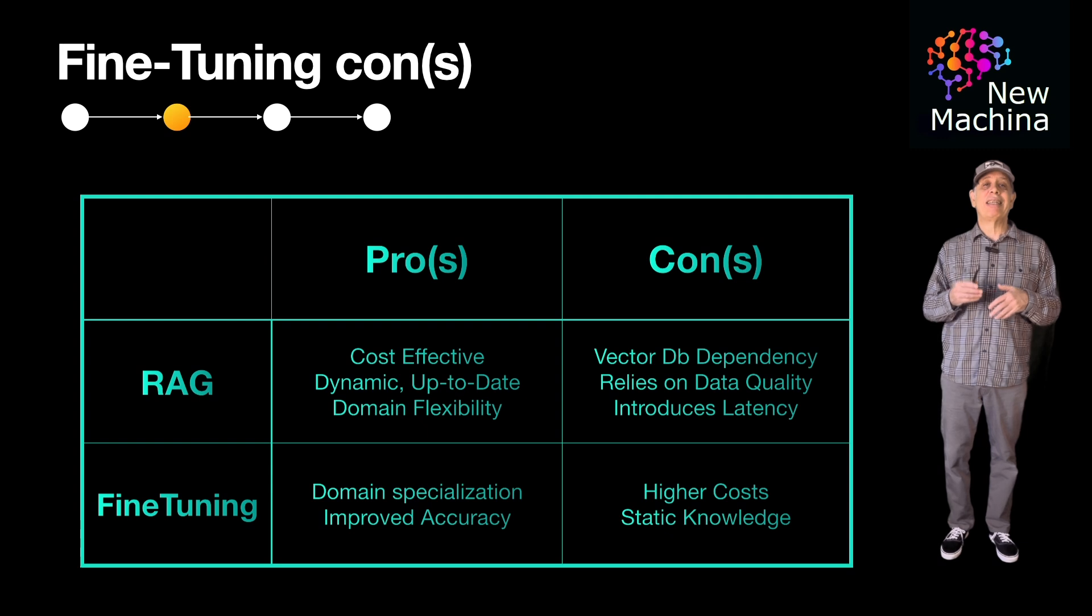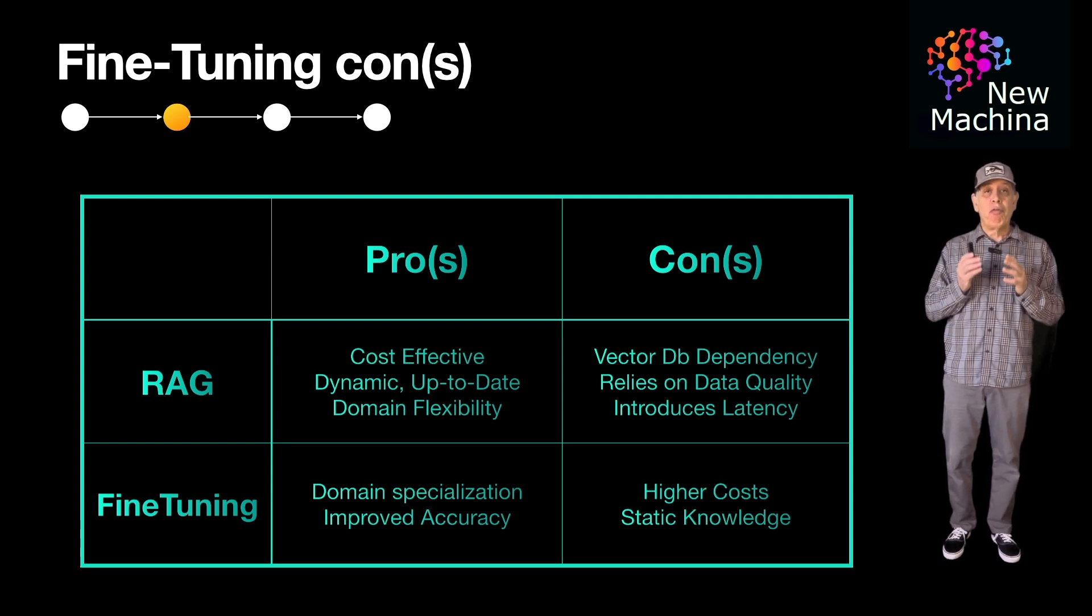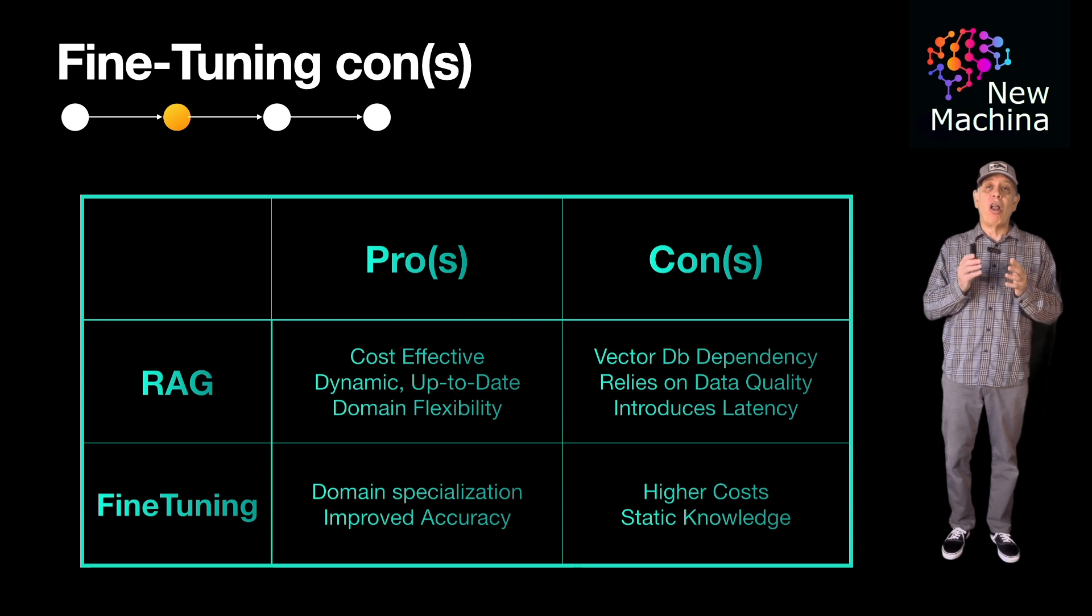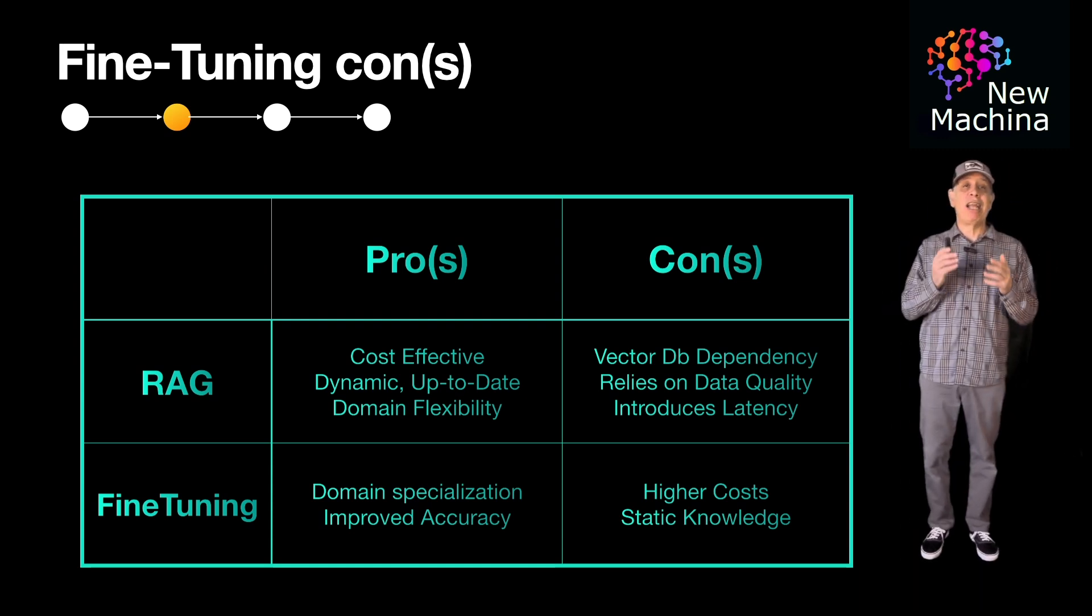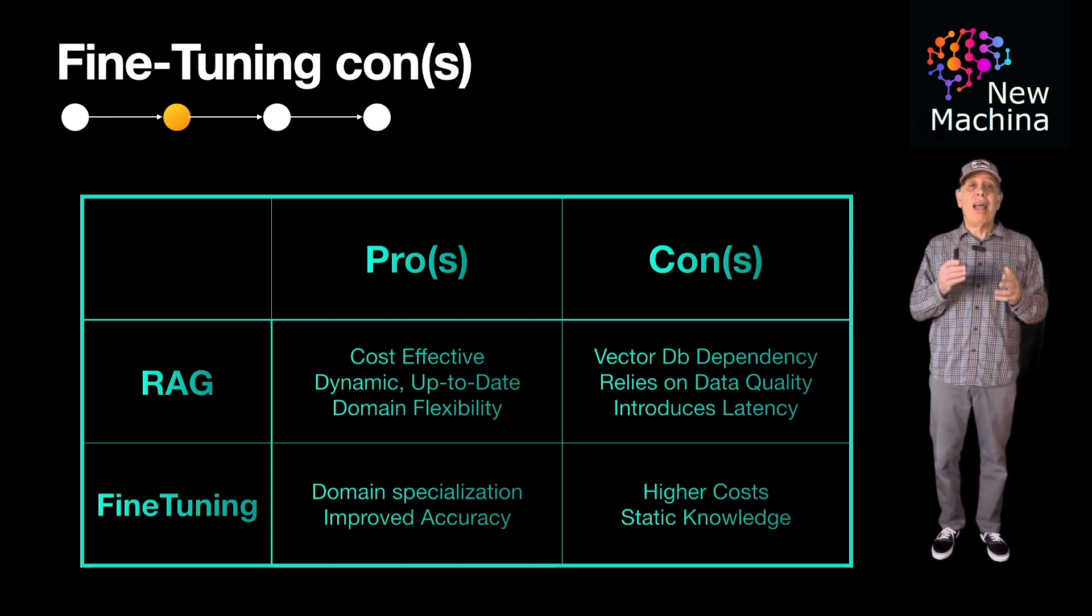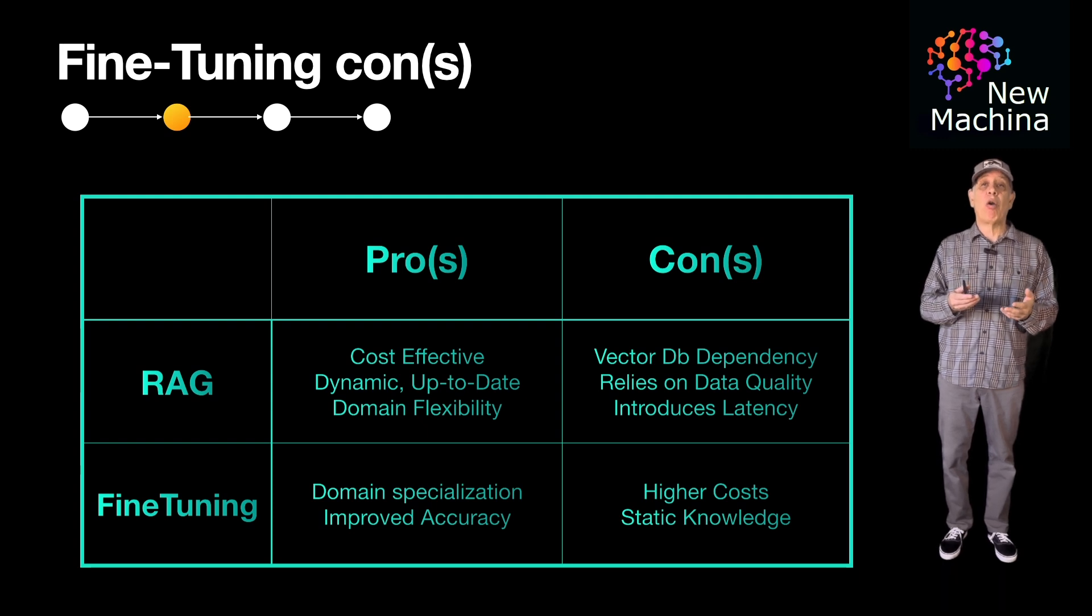The second is static knowledge. When you fine-tune the LLM, the LLM's knowledge is fixed until the next fine-tuning session, so the LLM can adapt to new information without retraining.